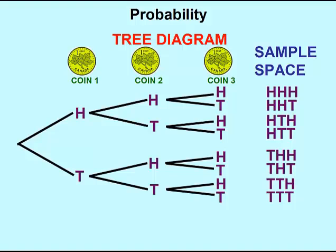That gives us a sample space that looks something like this. HHH refers to the first coin being heads, the second coin being heads, and the third coin being heads. HHT would be the first coin heads, the second coin heads, and the third coin tails. The rest of the sample space is done in a similar fashion, giving us a total of eight possible outcomes. The probability of flipping three coins and getting exactly two heads is three out of eight.